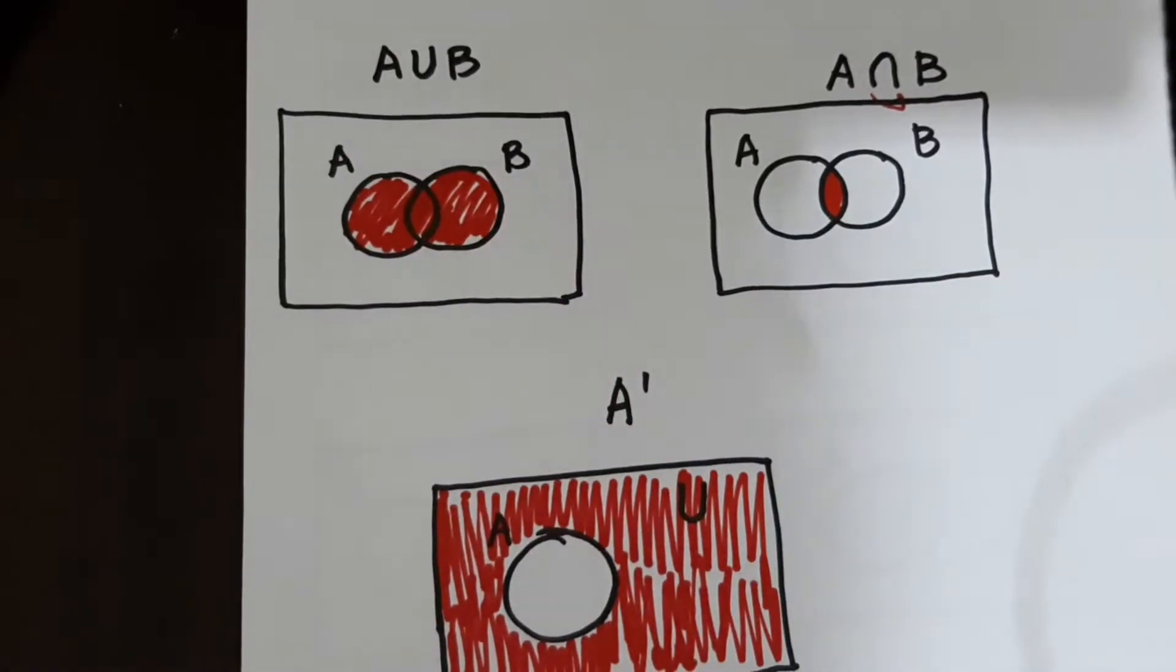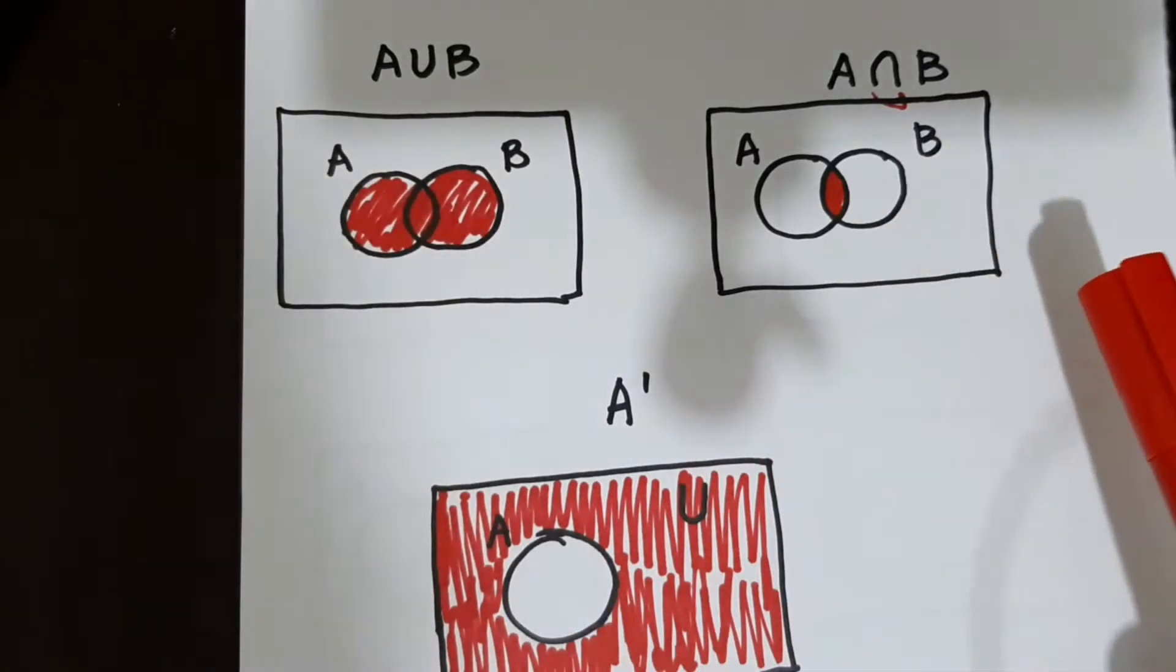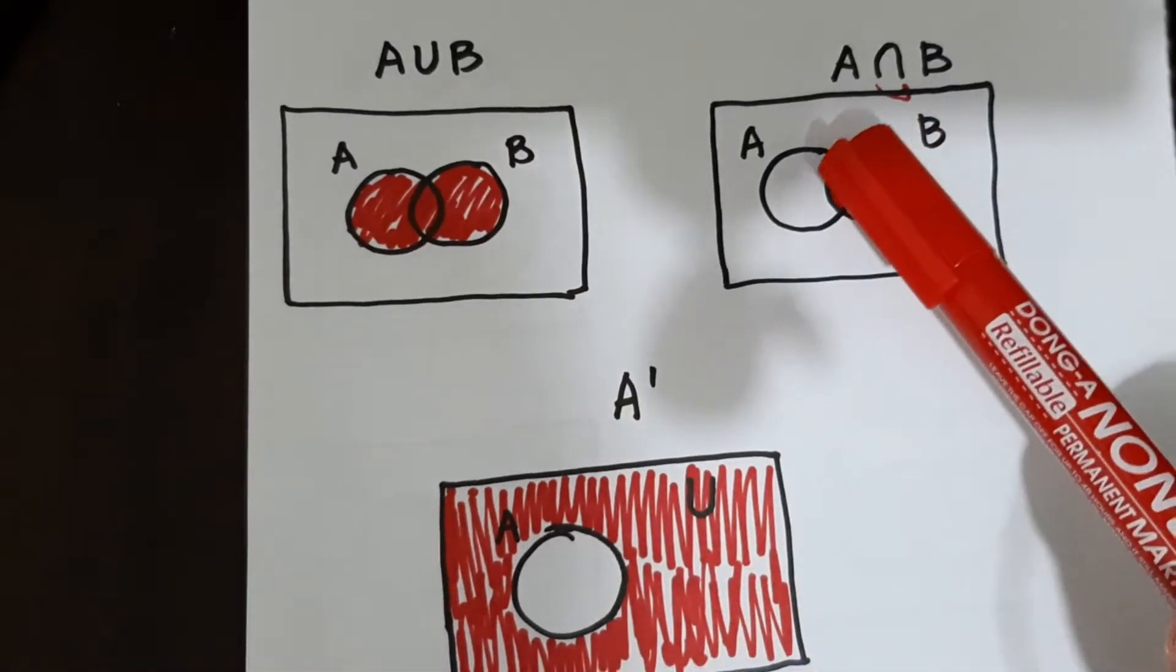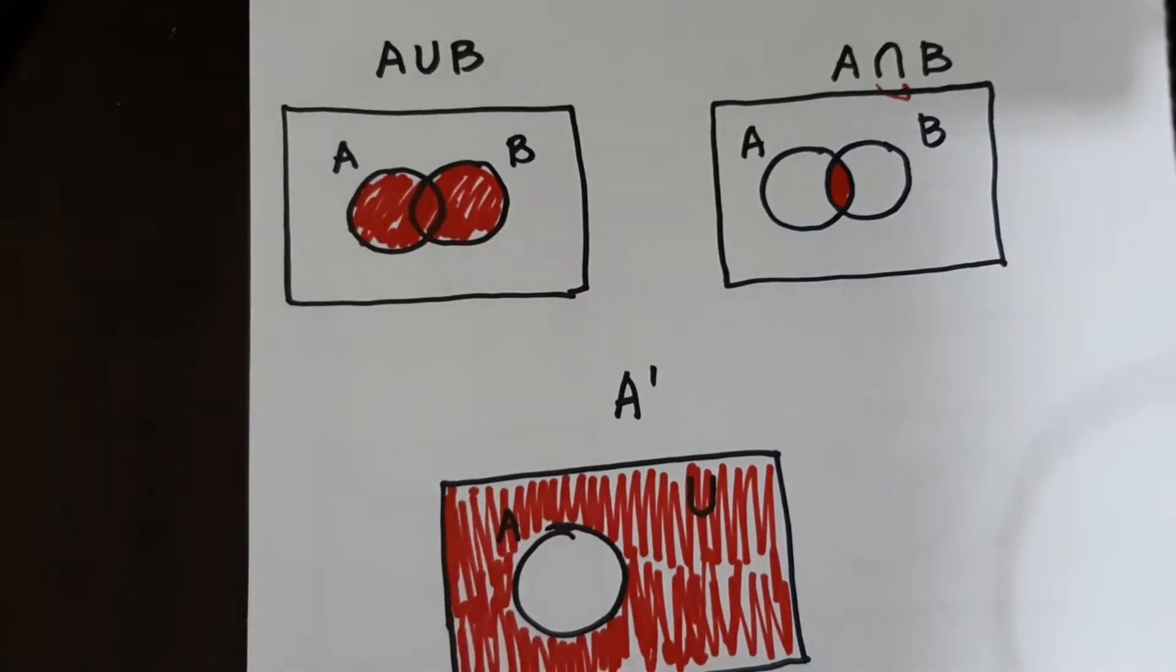And then sa intersection, we have the common elements. So alam natin kapag intersection, common elements lang yung kinukuha o yung mga elements na pareha sila. So therefore, ang shade ay nasa gitna lang or kung saan nag-overlap yung dalawang set.